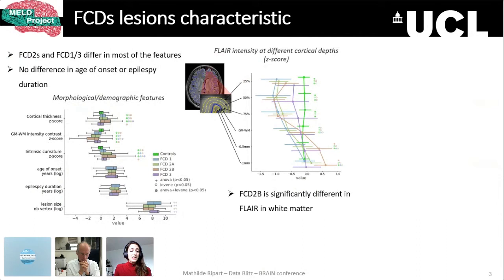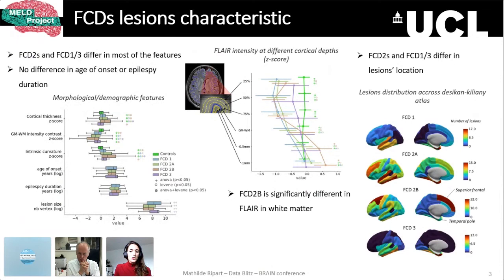Finally, FCDs differ in lesion location, with FCD2 being mainly located in the frontal and superior frontal lobe, and FCD1 and 3 in the temporal pole. To summarize, we highlighted with a red star the features that differentiate subtly differing histological abnormalities.